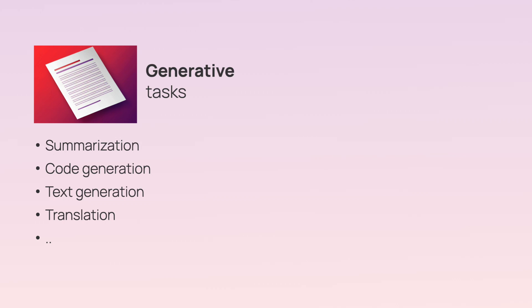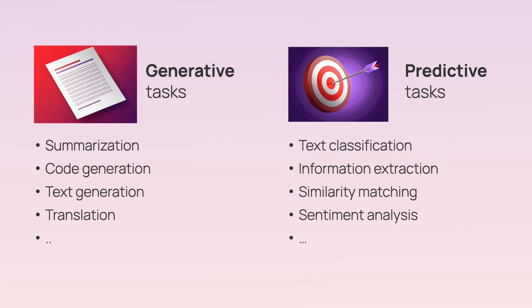Many of these tasks are generative — the output is open-ended, like a written text. But LLMs can also handle simpler predictive tasks, like classifying text by sentiment or topics.